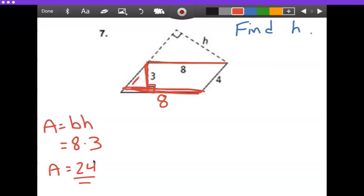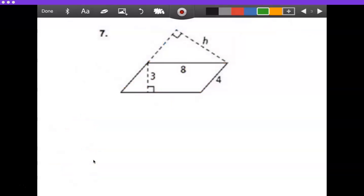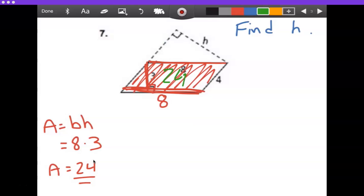Now I know that that means that this area is 24. Okay, there's 24 square units in there. All right, so what I need to do then is find h. Well, oops, I want to do something a little bit differently there.